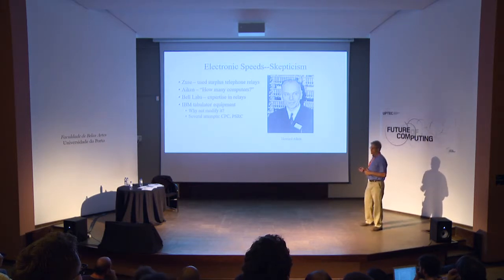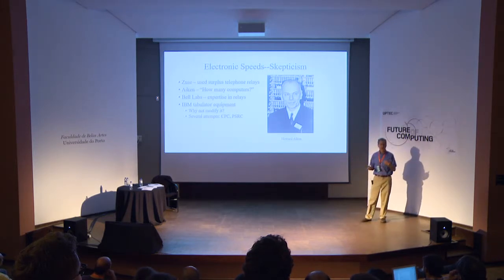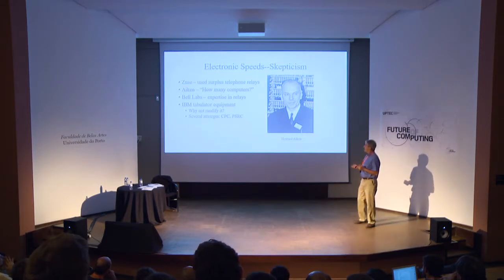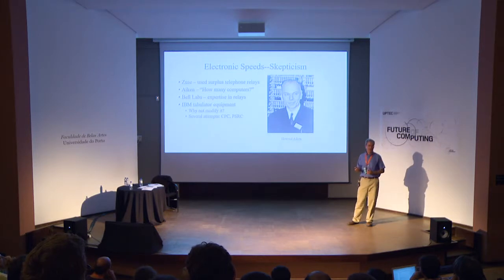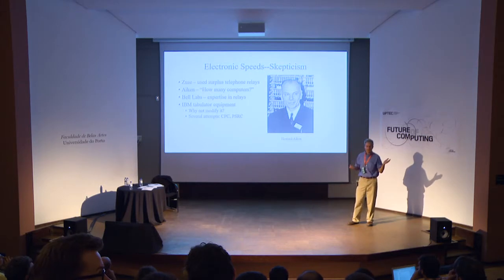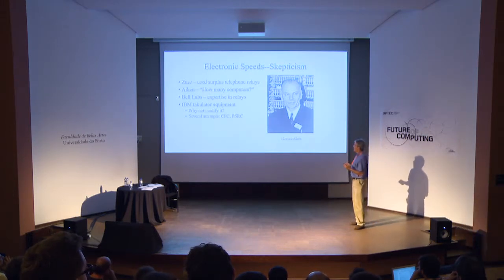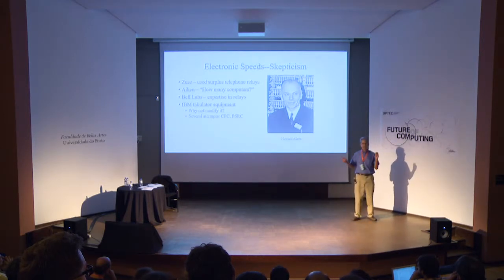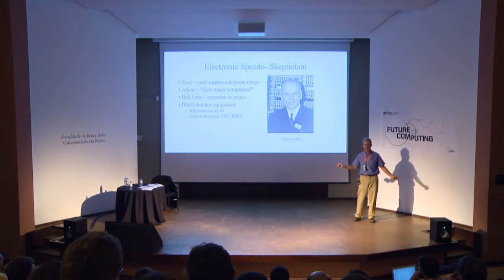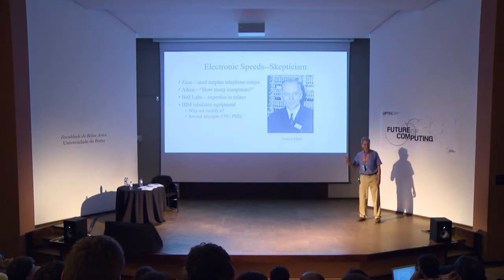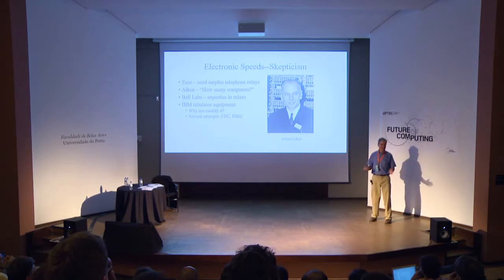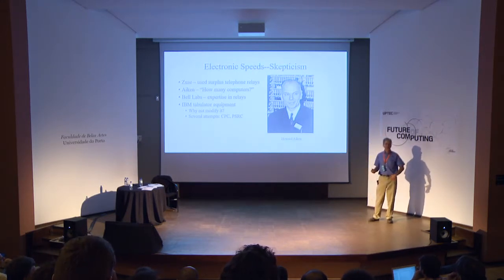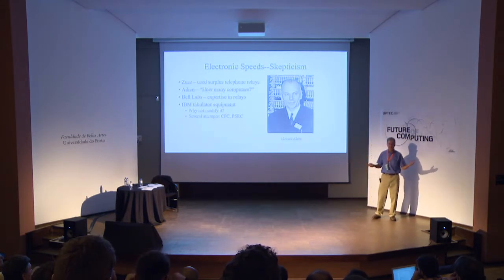Howard Aiken, a Harvard professor, built a mechanical computer using IBM equipment at Harvard, operational in 1944. He was skeptical about electronics because vacuum tubes burned out quickly. Aiken is probably the person behind the famous quote that only five computers would satisfy the whole world's needs. He was thinking of computers like astronomical telescopes or cyclotrons — a few in the world, not one in everybody's hand.